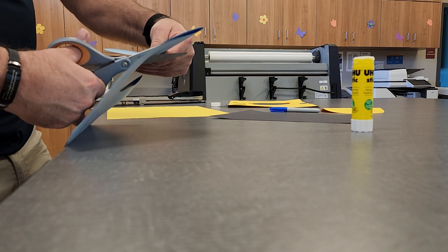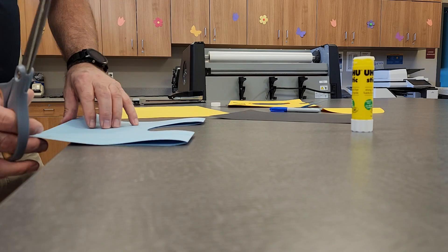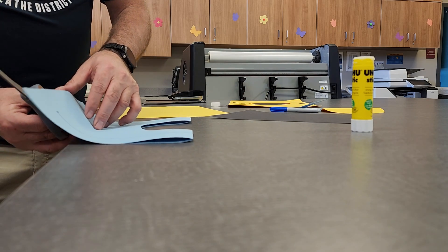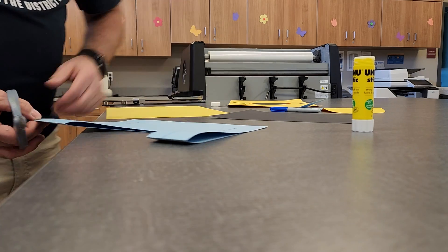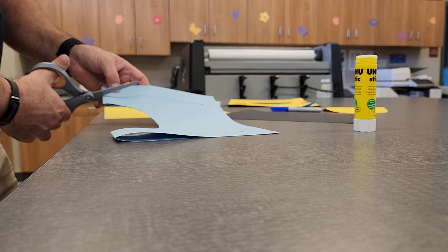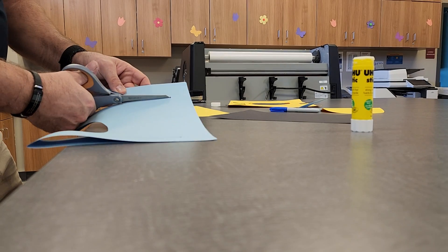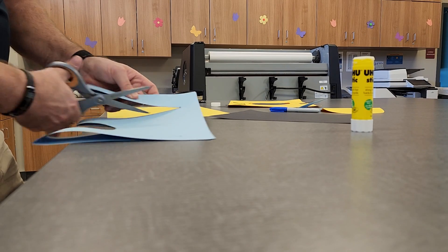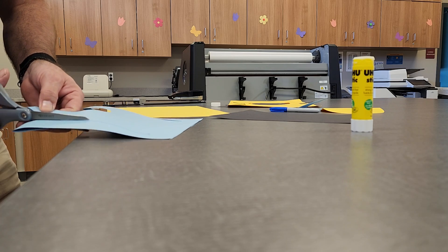So you cut the circle out. I am the best cutter ever. No, not really. So you have your circle there. And then you're going to cut your line while it's still folded. Just cut straight to the end, bottom and the top.